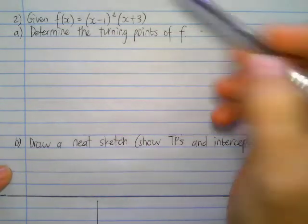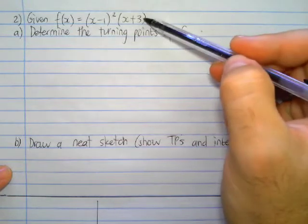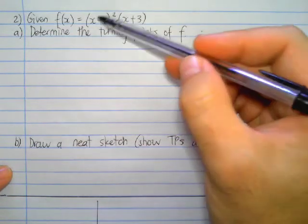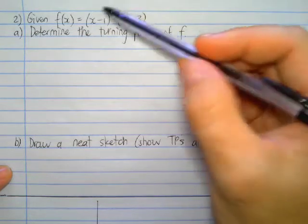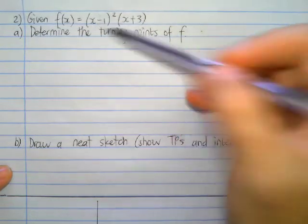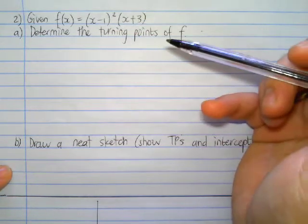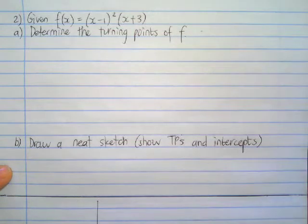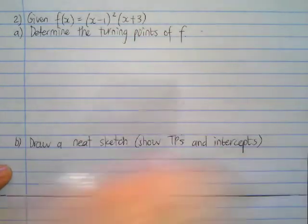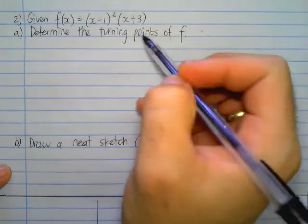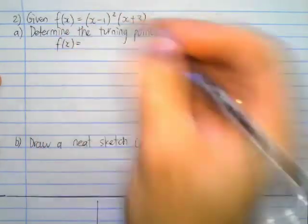We've done one already and here is your second question. It says given f(x) equals (x-1)² times (x+3), determine the turning points of f. Before we get into the question, we'd have to first times this out.